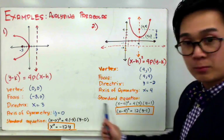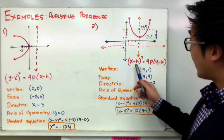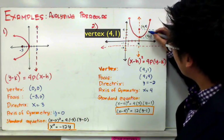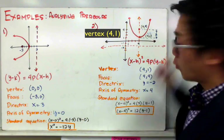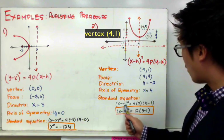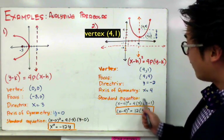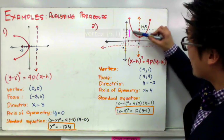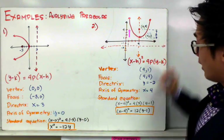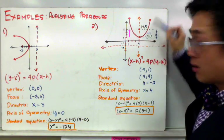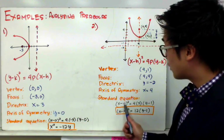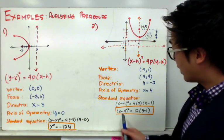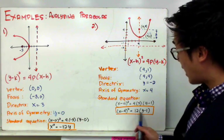For the standard equation, we replace h and k with our vertex values: h = 4 and k = 1. The distance between the focus and the directrix measures 3 units, so the p-value is positive 3 because the parabola opens upwards. The standard equation becomes (x − 4)² = 4(3)(y − 1), which simplifies to (x − 4)² = 12(y − 1).